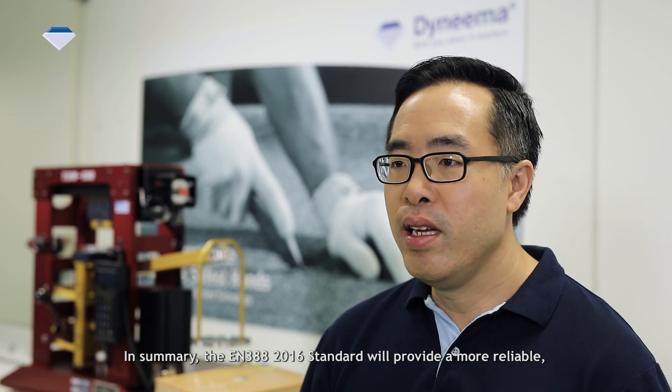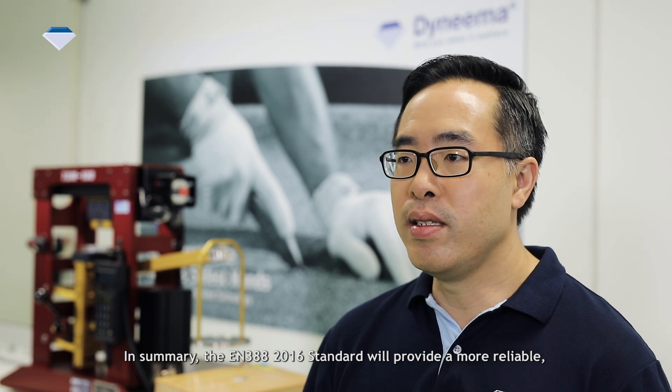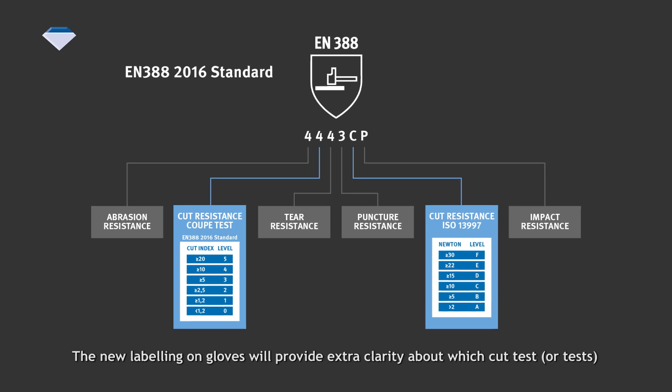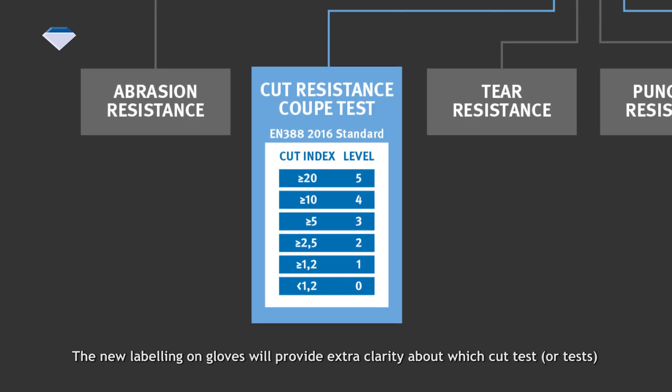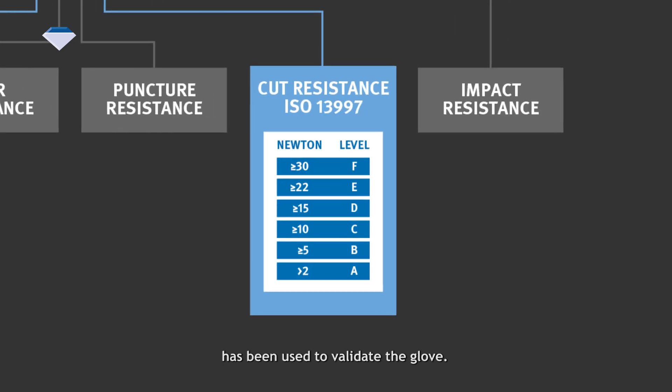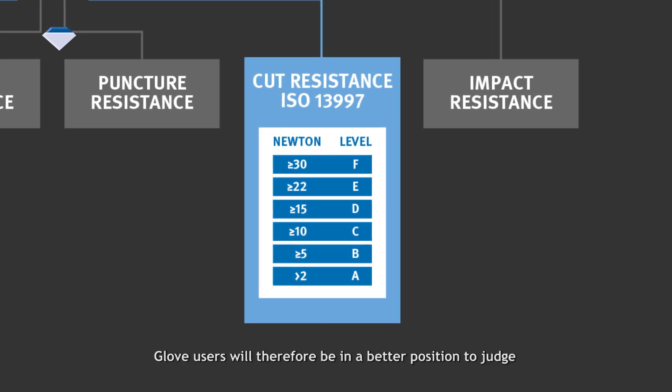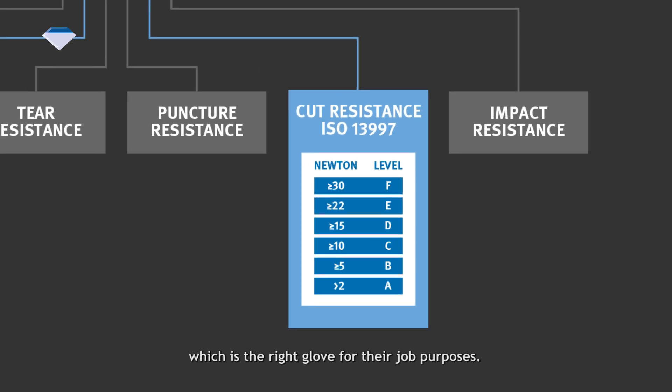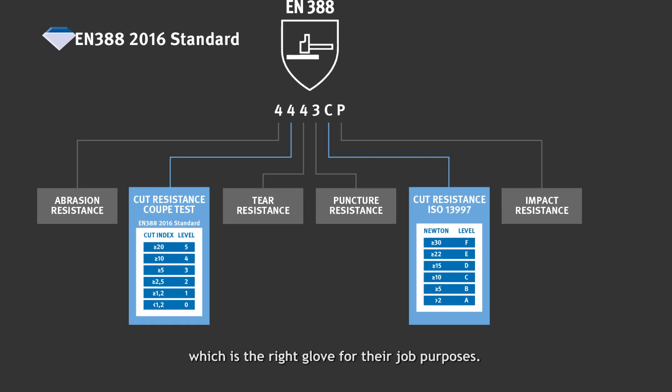In summary, the EN388 2016 standard will provide a more reliable, consistent, and accurate cut resistance test with the introduction of the ISO 13997 standard in view of material advancements. The new labeling on gloves will provide extra clarity about which cut test has been used to validate the glove. Glove users will therefore be in a better position to judge which is the right glove for the job.